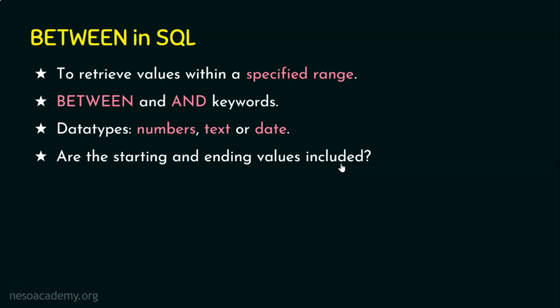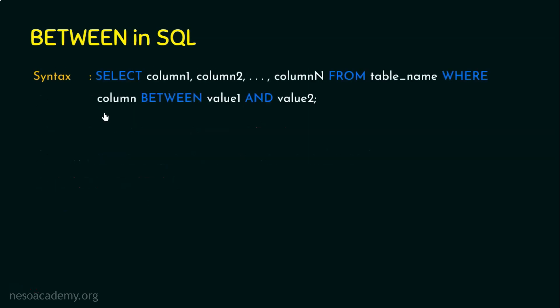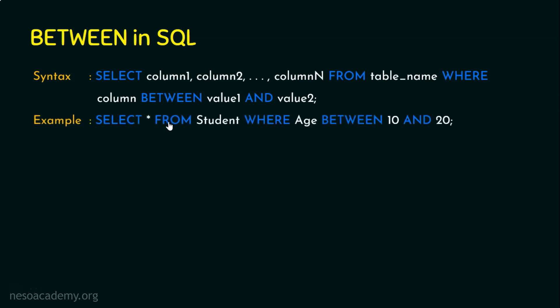Is there a negating keyword, like NOT IN from the previous lecture? Of course — the negating keyword here is NOT BETWEEN. With that theoretical knowledge, let's look at the syntax. It's the same structure: SELECT column1, column2 ... FROM table_name WHERE column BETWEEN value1 AND value2. For number types, give values directly. For text or date types, values should be enclosed in single quotes.